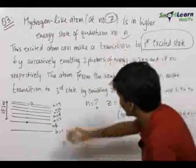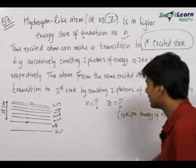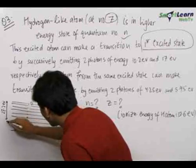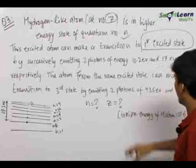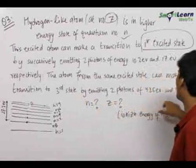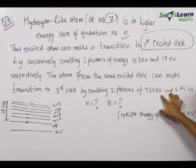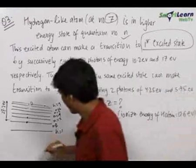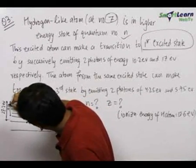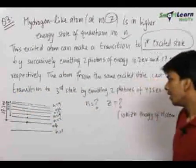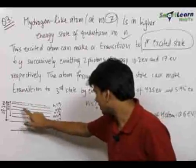Now the atom from the same excited state n can also make a transition to the third state by emitting two photons of 4.25 eV and 5.95 eV, the addition of which gives 10.2 eV. So the energy difference from this nth state to the third state is 10.2 eV.